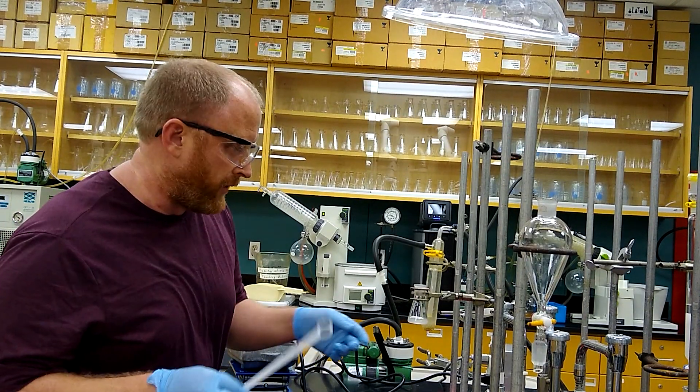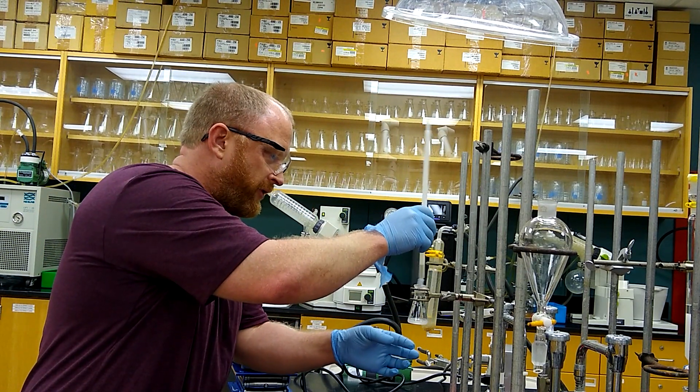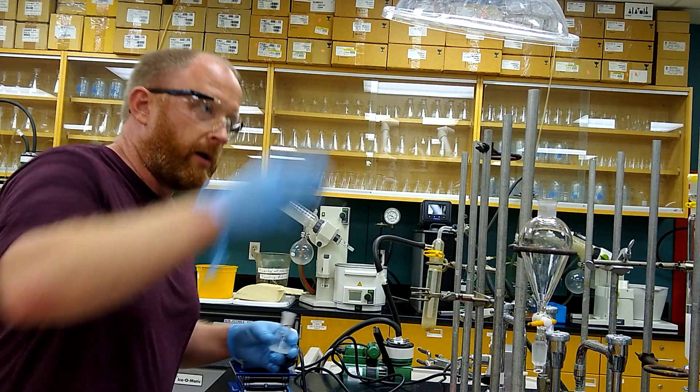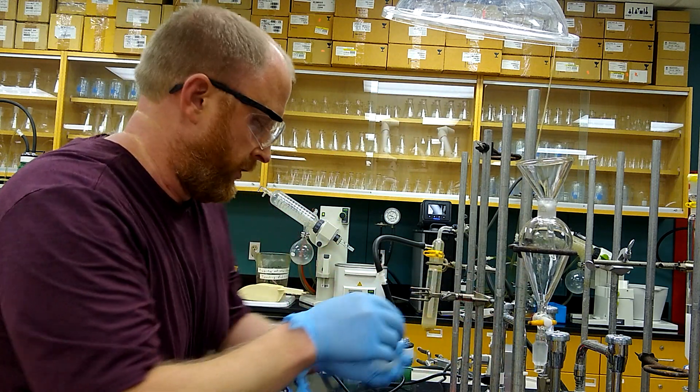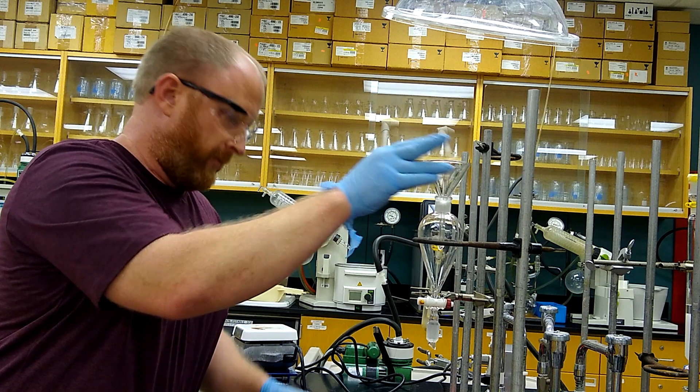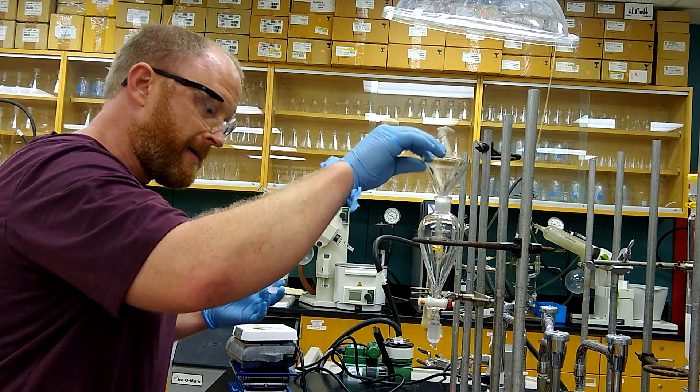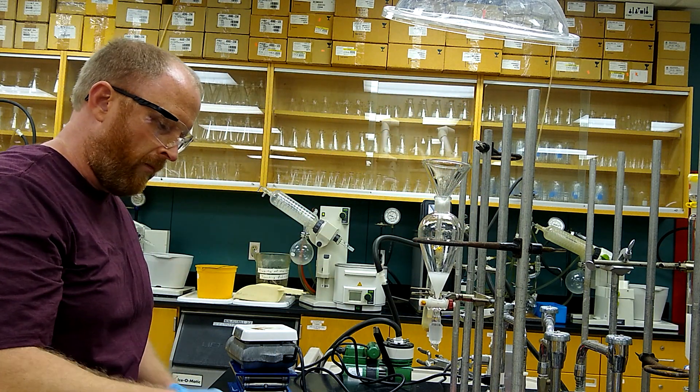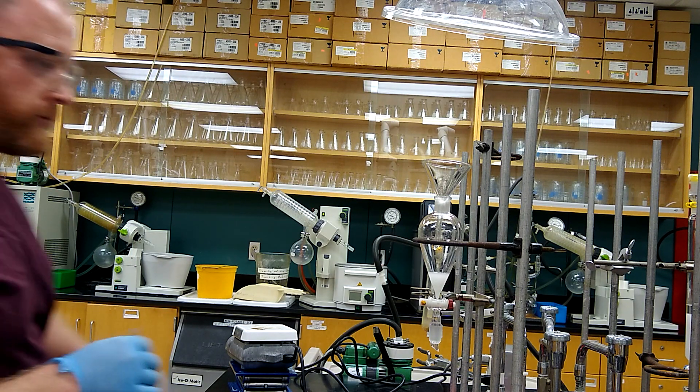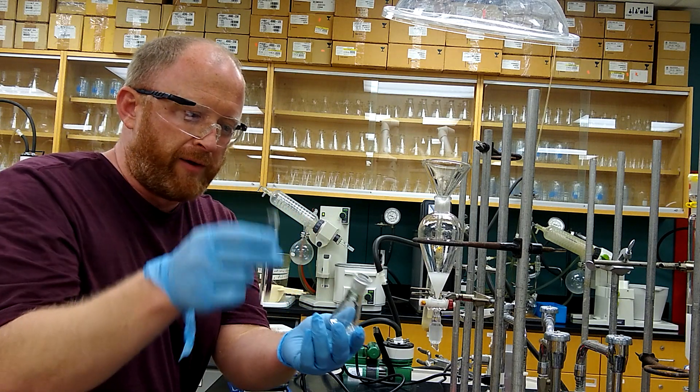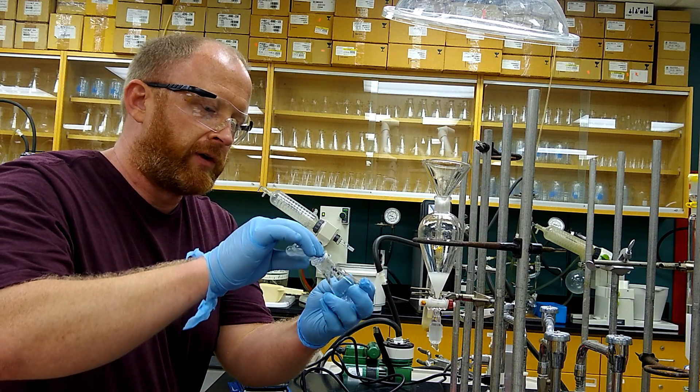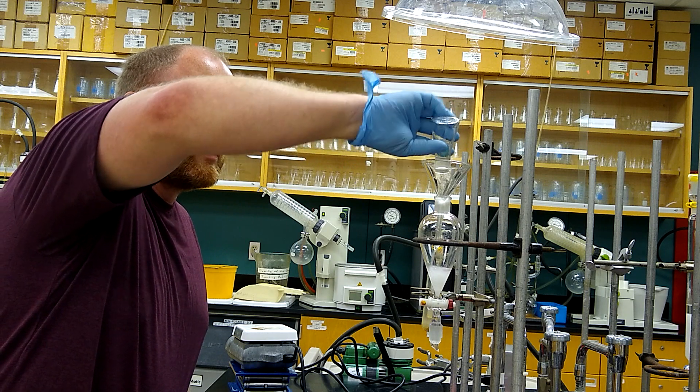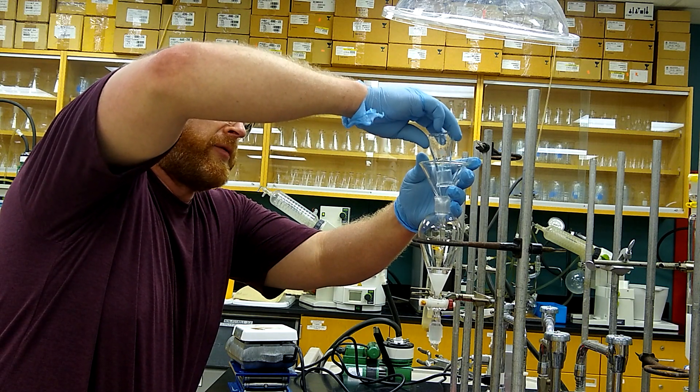Now after letting our reaction cool, I'm just going to fish out my stir bar and we'll transfer this over to a separatory funnel. I'm going to use about 5 mL of ether to rinse that flask, and then we'll transfer that out of the flask.